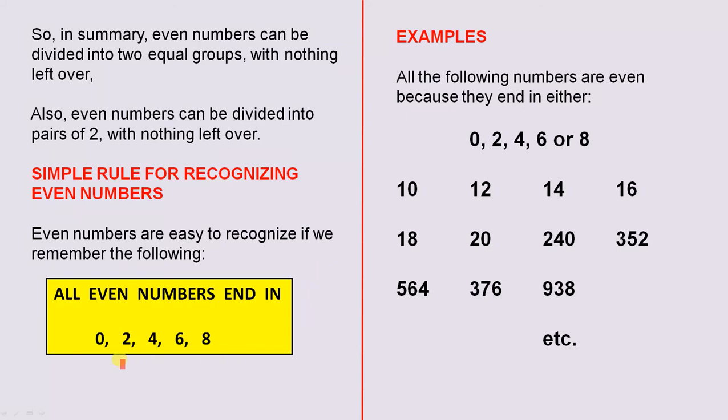All even numbers end in 0, 2, 4, 6 or 8. So if any number ends in any of those numbers there, it is even.